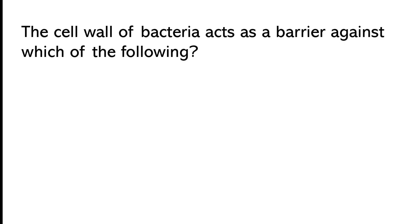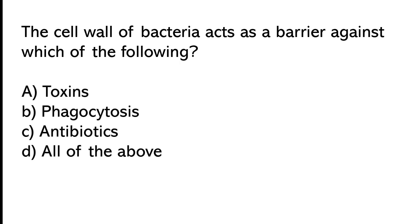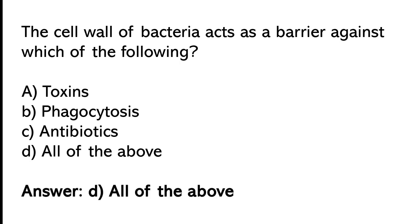The seal wall of bacteria acts as a barrier against which of the following? Toxin, phagocytosis, antibiotics, or all of the above. The correct answer is option D: All of the above.